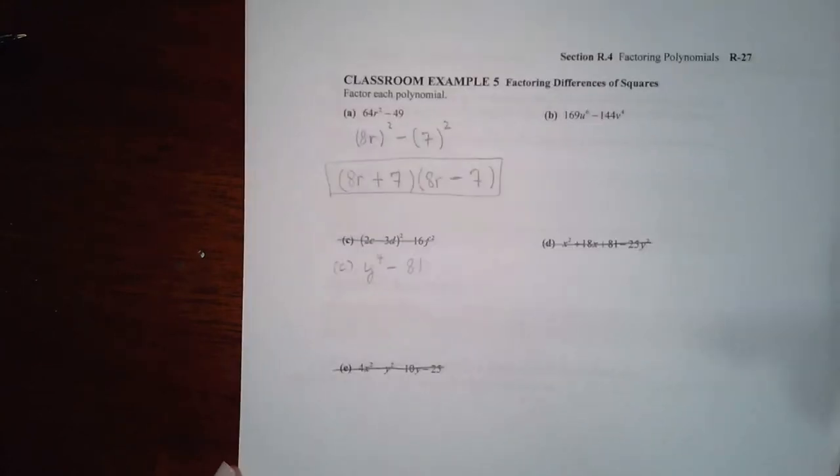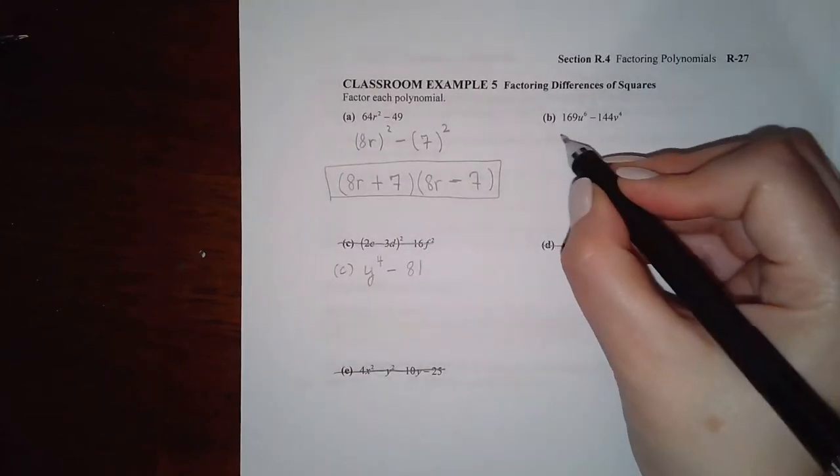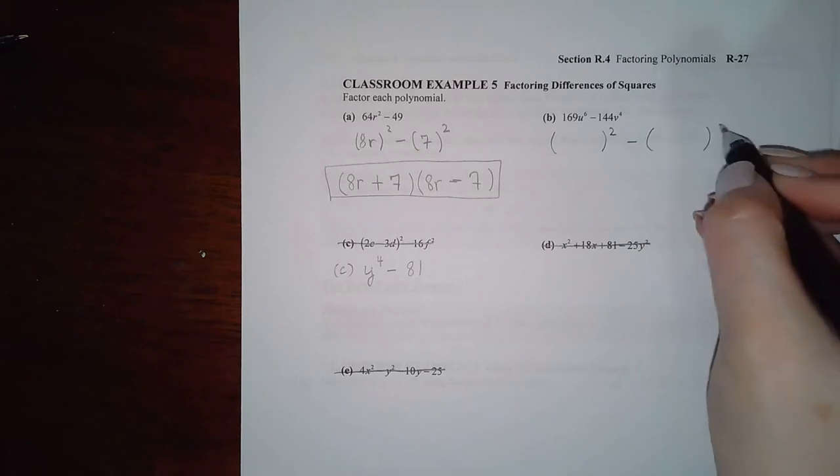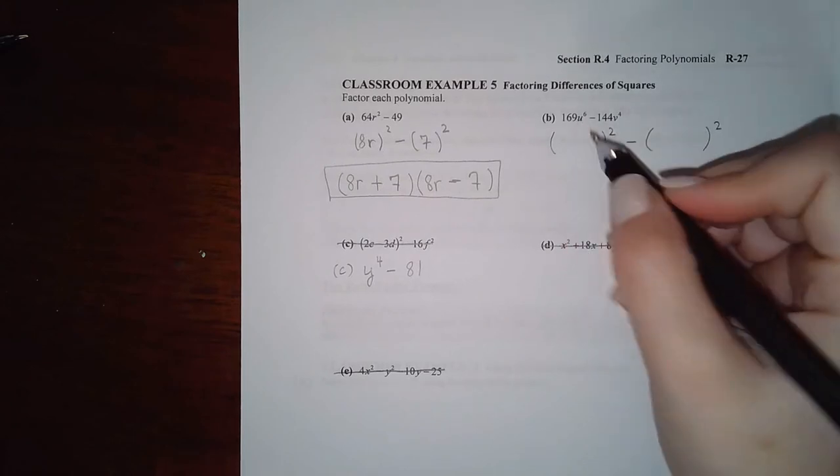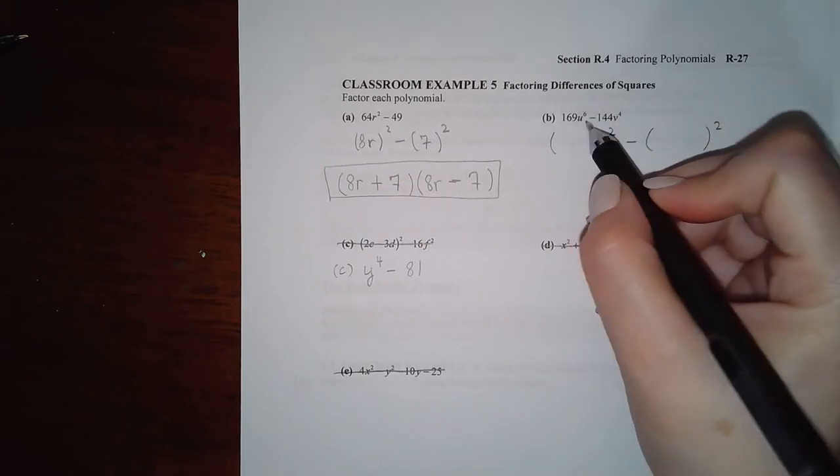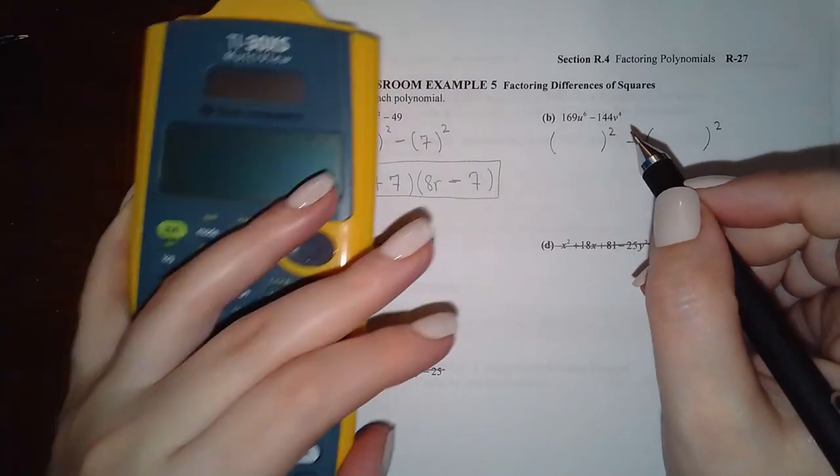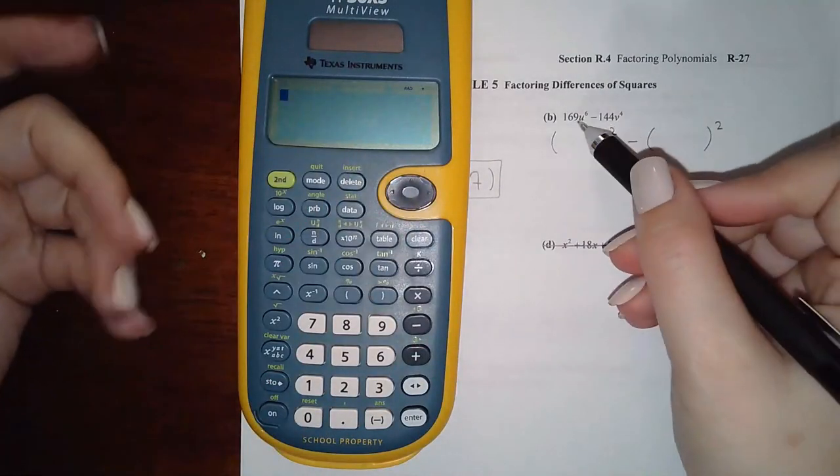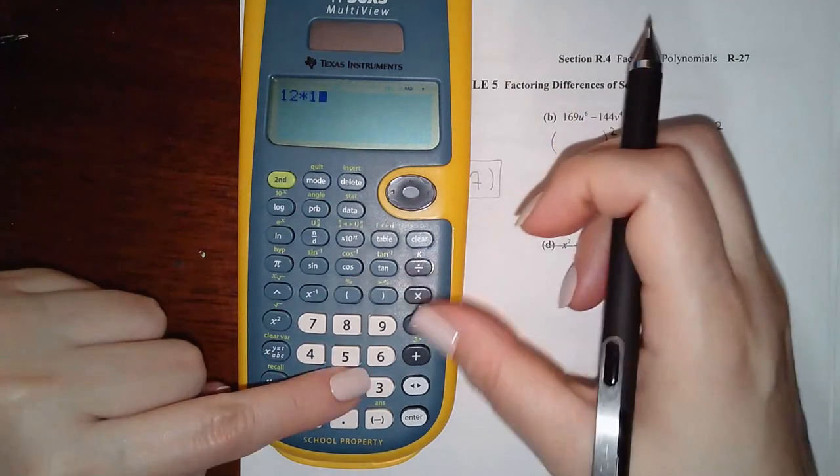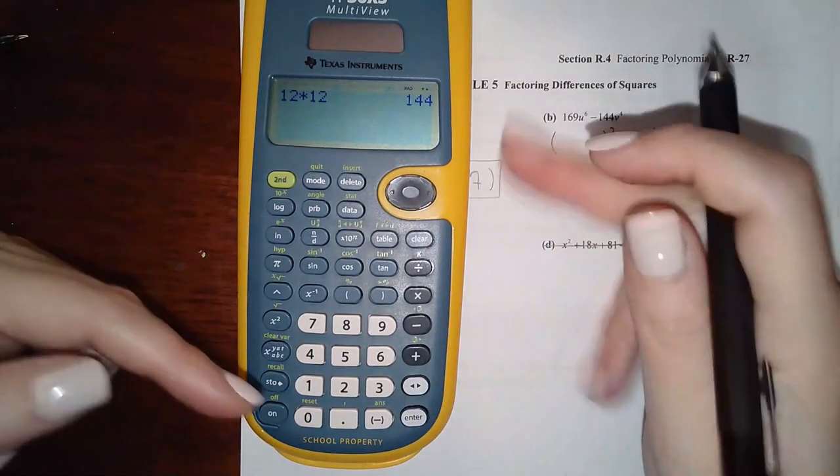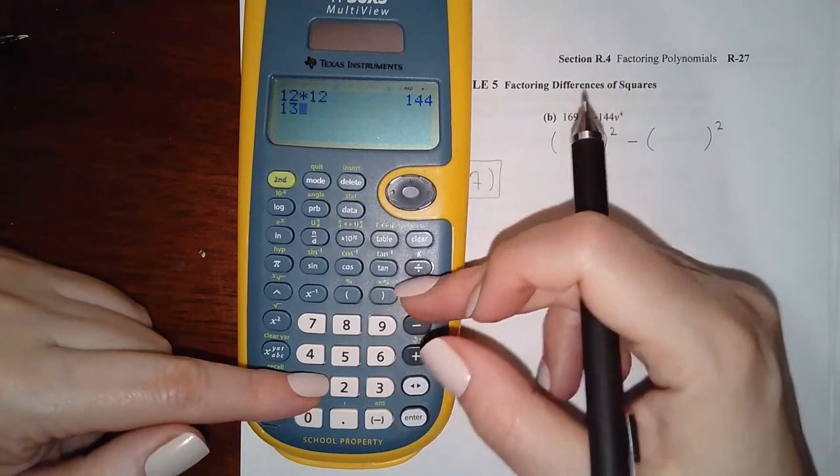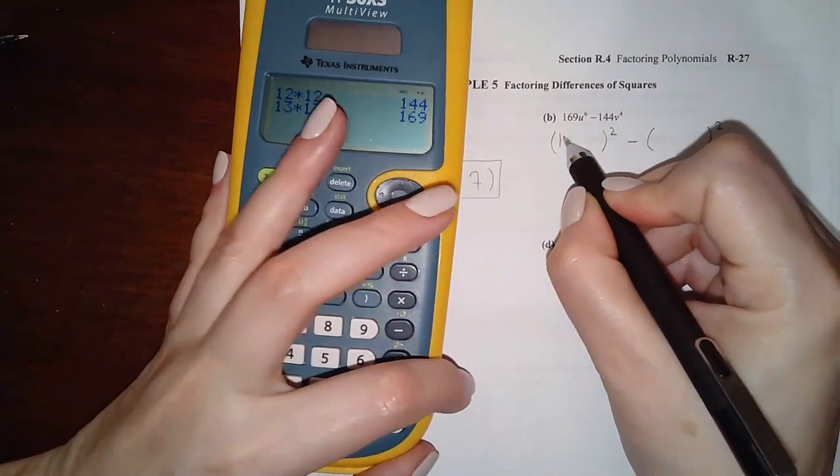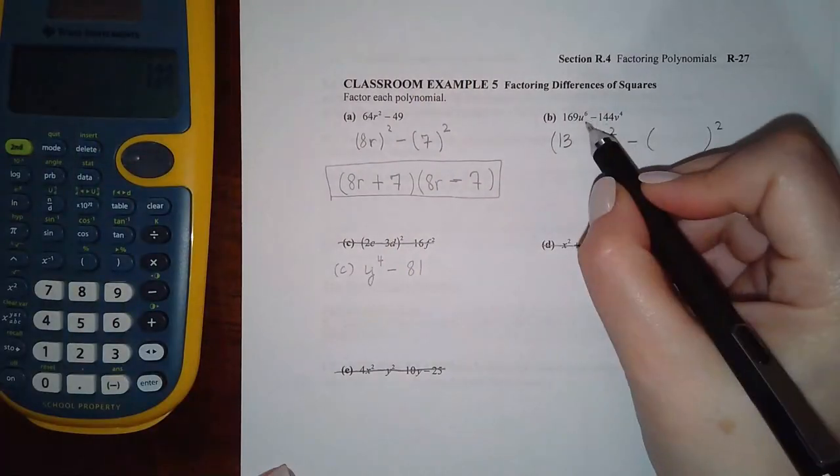Here it's a little bit more complicated but it's still the same thing. So what is being squared here and what is being squared there? I know that 13 times 13 is 169, only because I've seen it a lot. But if you don't know, you know that 12 times 12 is 144, and since this is bigger you're gonna have to go bigger. So 13 times 13 is 169, so this is 13 squared. And then what gives me u to the 6? Well, u cubed times u cubed, I would add the exponents, that gives me u to the 6.